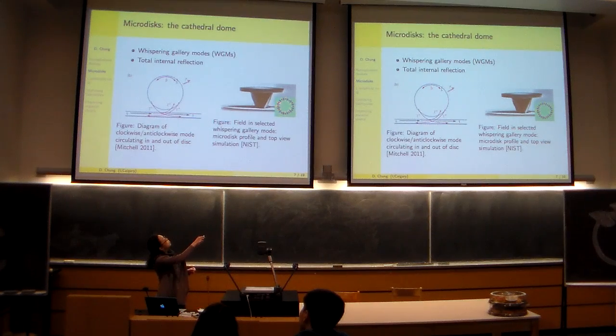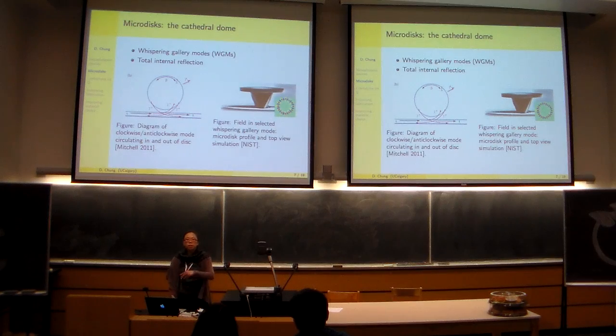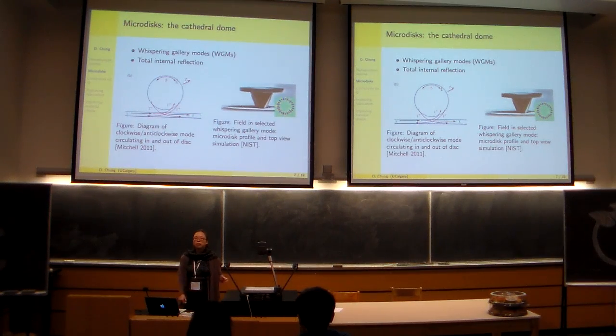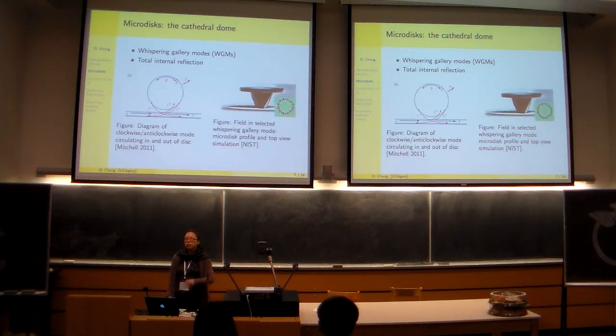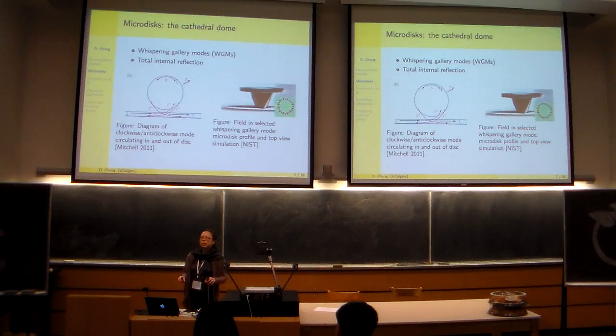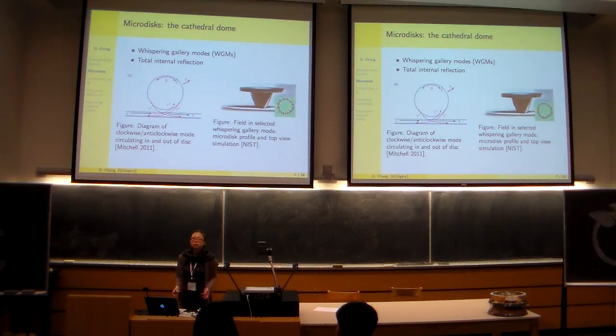In an ideal simulation, you see that there are nodes and antinodes that are supported in and around the edges of the disc. So this is really cool, because you can see from simulation, and you can see this in practice, that using a microdisc, you localize energy in accessible areas of the device.